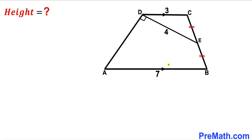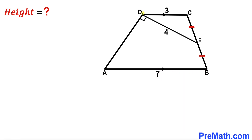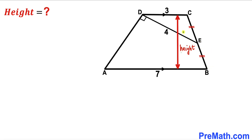Welcome to pre-math. In this video we have got trapezoid ABCD such that base AB is parallel to base CD. Base AB is 7 units, base CD is 3 units, segment DE is 4 units, angle ADE is 90 degrees, and segment CE equals segment EB. Our task is to calculate the height of this trapezoid.